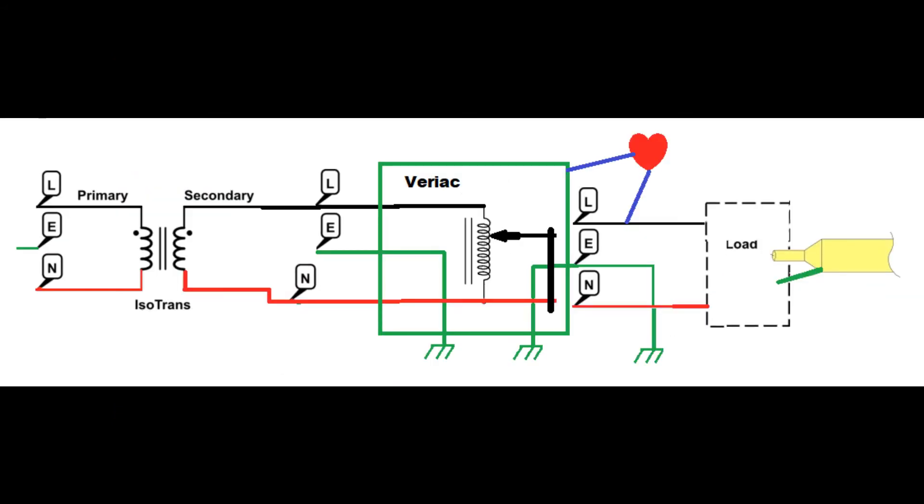Now, if you had it hooked up isolation transformer first and made the same mistake by touching your ground and your line of your variac, you're not going to get a shock. Of course, you can still get a shock with this setup by touching the earth and line on the hot side of the isolation transformer.